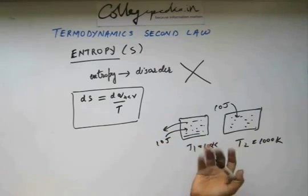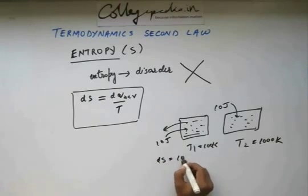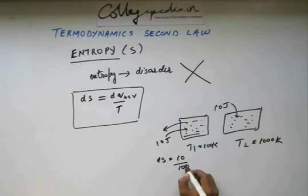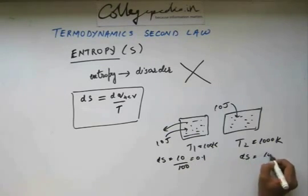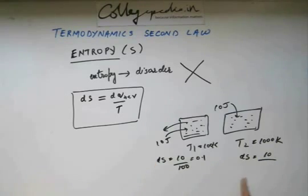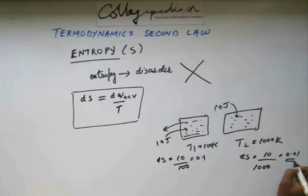dS change in entropy is 10, dQ is 10 upon T, T here is 100. This is 0.1. In this case, dS will be amount of heat given dQ by T, which is 1000. So in this case, we have 0.01. Now you can see entropy change in this case is higher, entropy change in this case is lower.